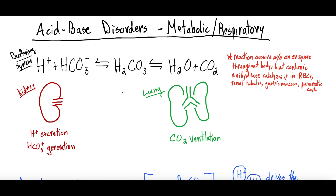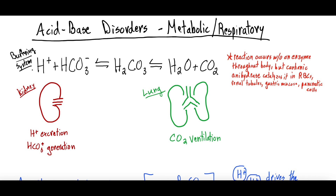The body wants to maintain a normal pH at all times. The equation represents this main buffering system: hydrogen ions (which drive the acidity of a solution) and bicarbonate ions (which drive alkalinity) can combine to form carbonic acid, which breaks apart into water and CO₂. This reaction occurs in both directions. When the body has too much hydrogen and is becoming acidotic, the equation shifts to produce more water and CO₂, which is breathed out, keeping blood pH normal.